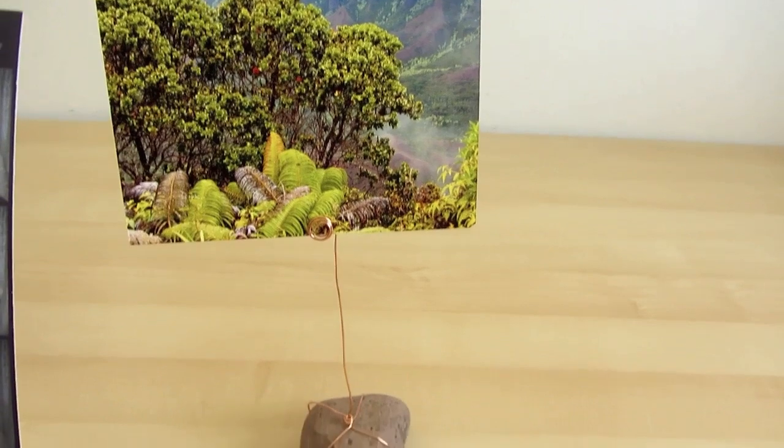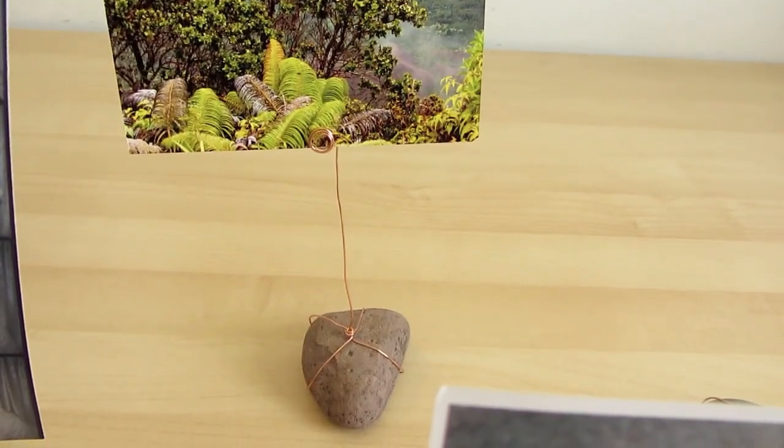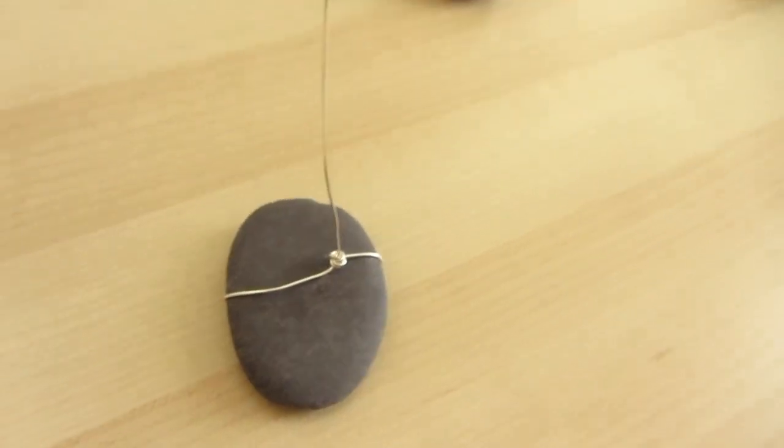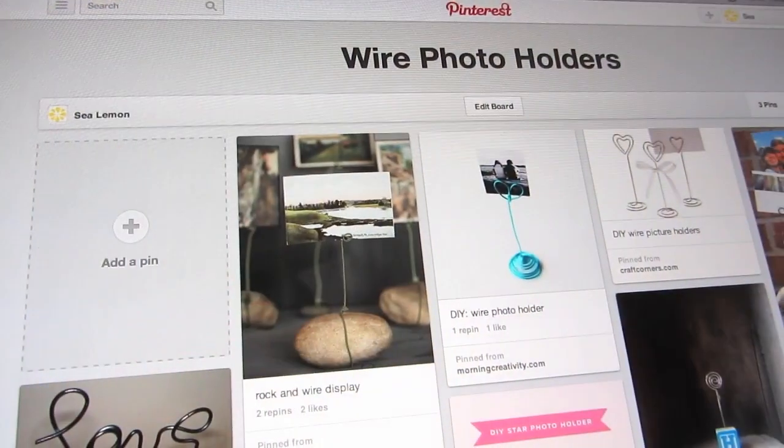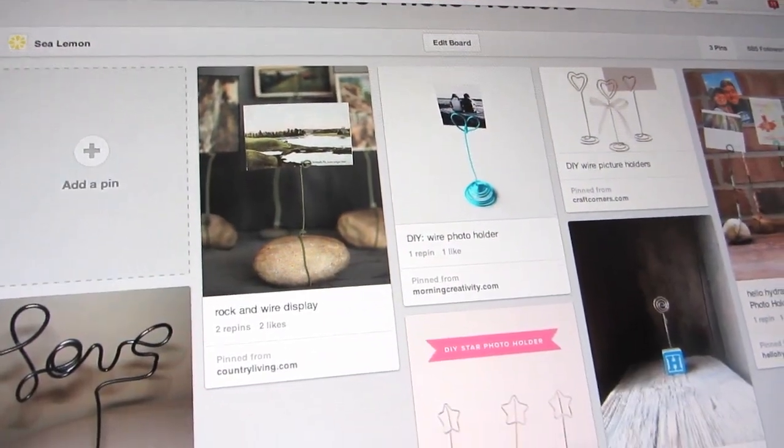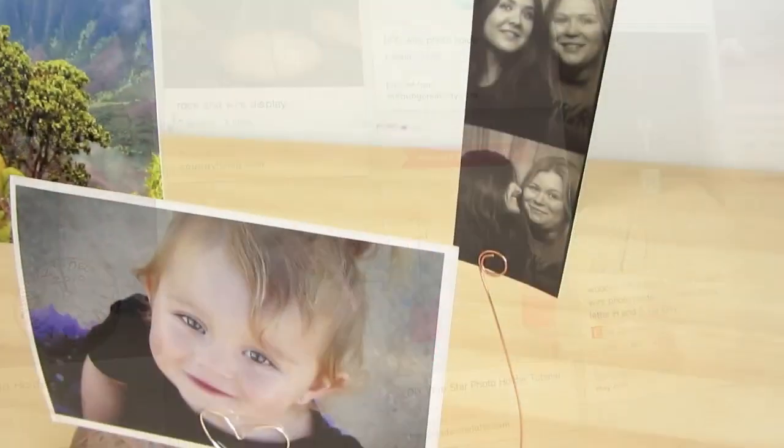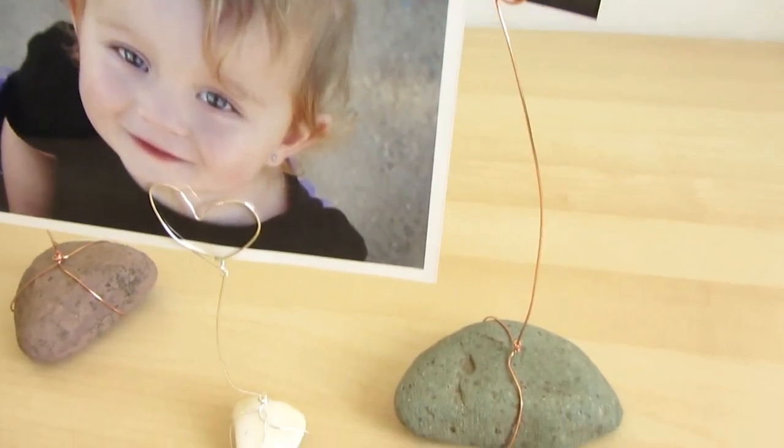I decided to make the rock and wire photo holder, and I based it on the spiral one with the rock base. But I also wanted to make a heart one, and you can find the direct links to the pins that I got inspired by in the description below. Since this is a collaboration, you can find more Pinterest inspired tutorials at the end of this video. You can subscribe to their channels and check them out in the description below.